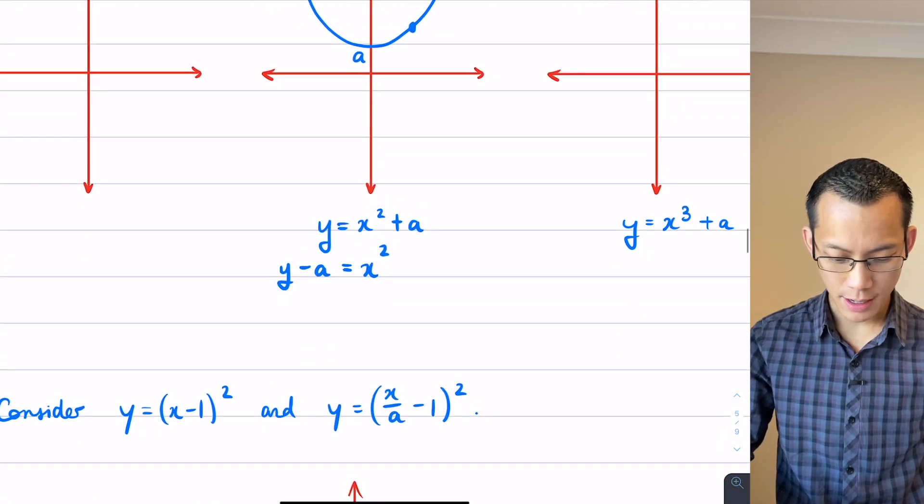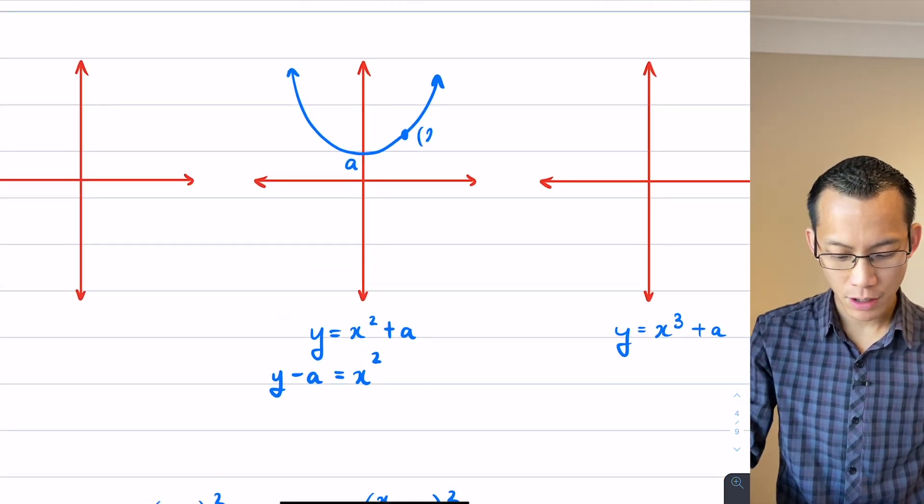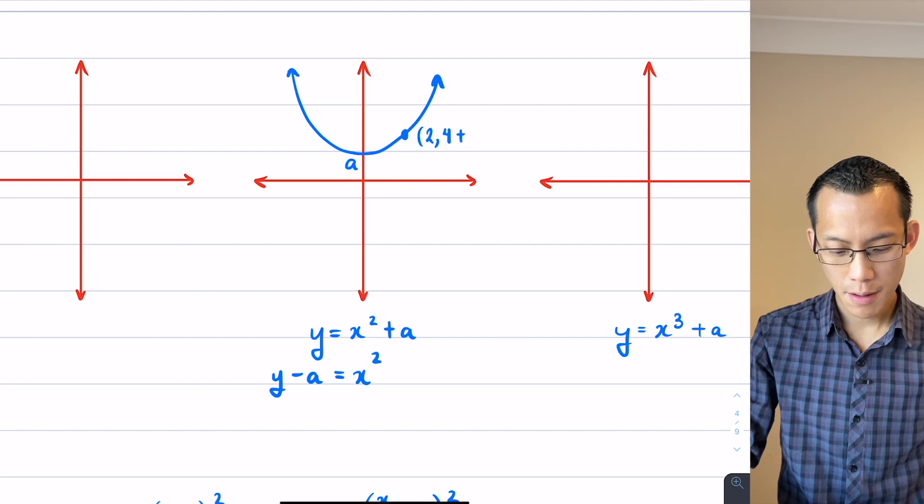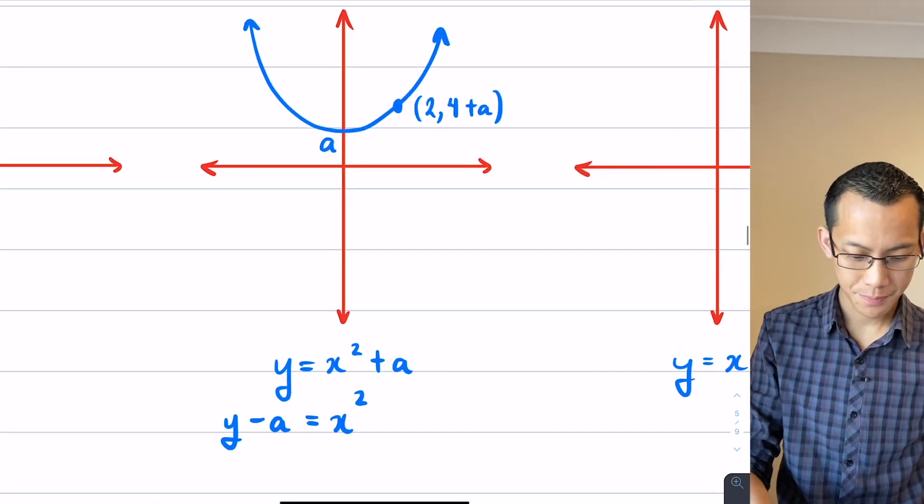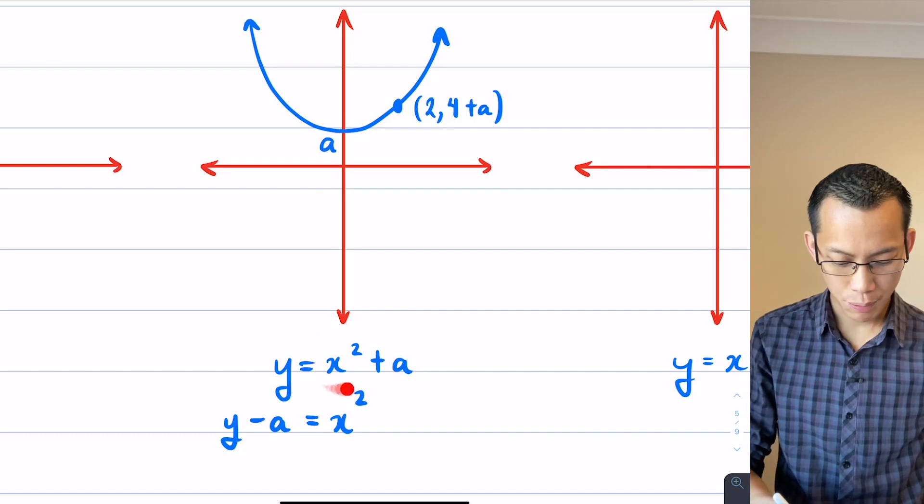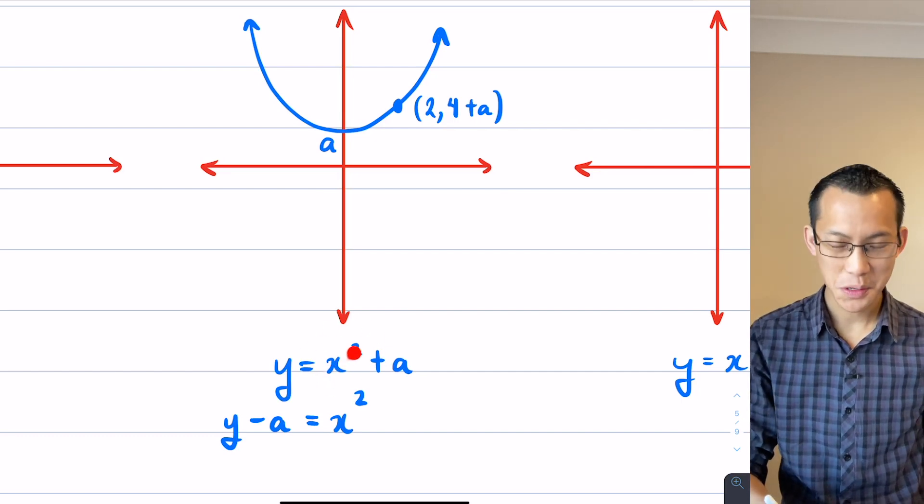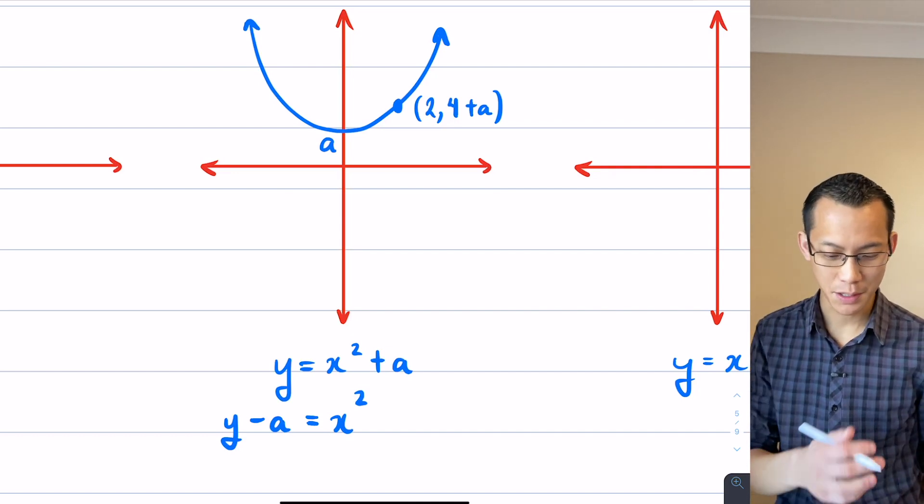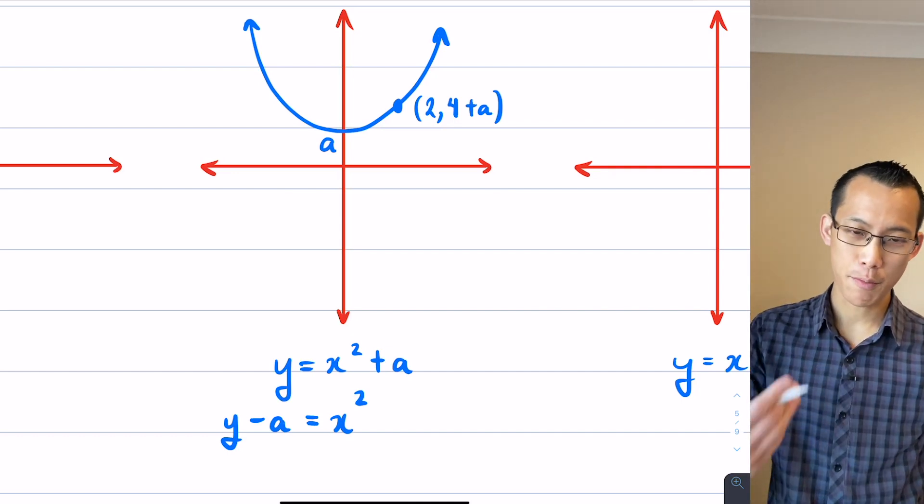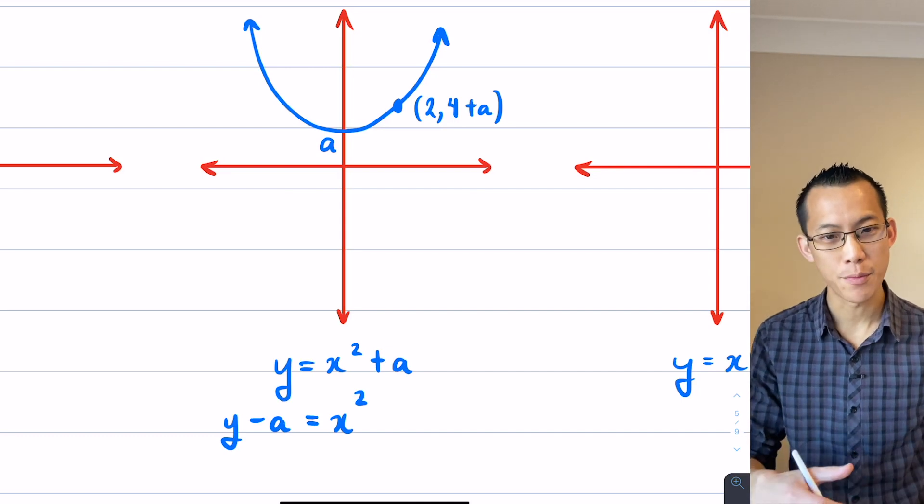So what I can do is over here, I can say, that's going to be my coordinate: 2, 4 plus A. And you can go ahead and verify this by putting in x equals 2, you're going to get 2 squared plus A. That's the 4 plus A that we saw earlier. So you can get your point for scale from the previous graph so long as you realize this is a movement upwards.